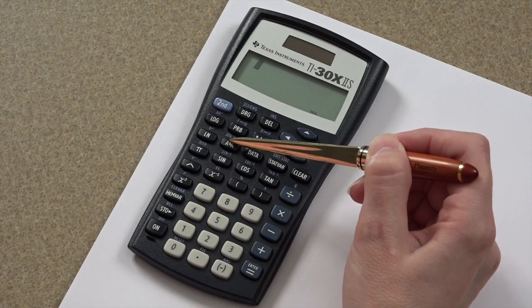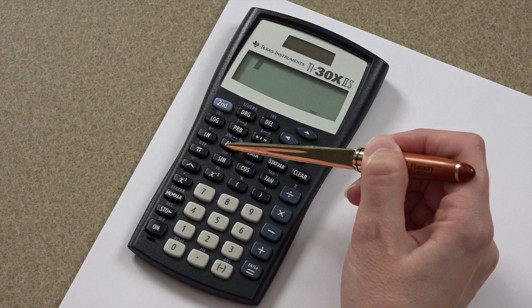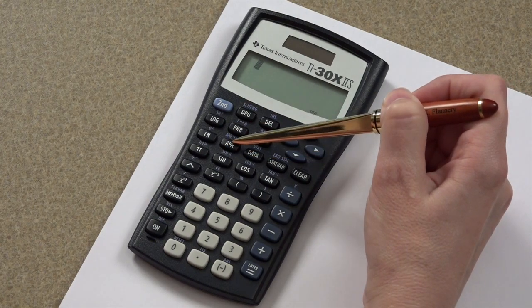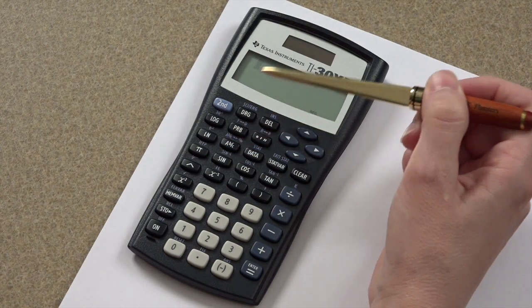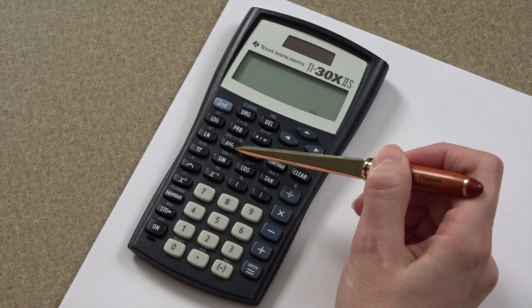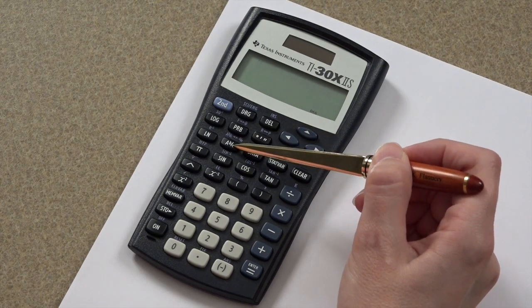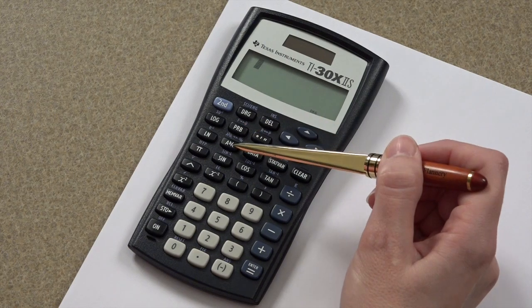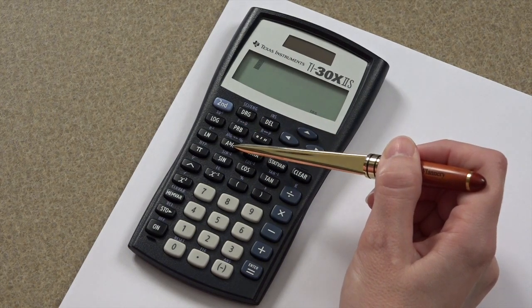That A represents the whole number part, the B represents the numerator part, and the C represents your denominator part. This fraction key separates every component of your fraction.